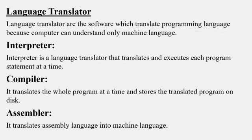Language translator software translates high level language into low level or machine language. There are three types of language translators: interpreter, compiler, and assembler. An interpreter is a language translator that translates and executes each program statement one at a time.